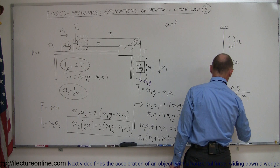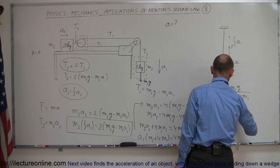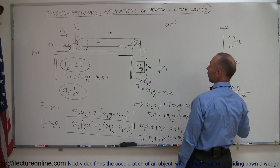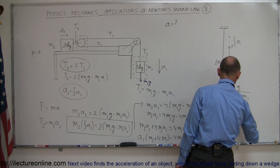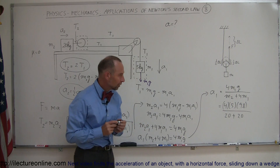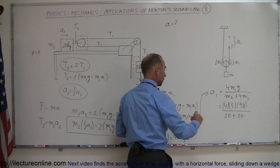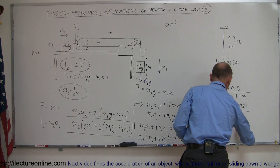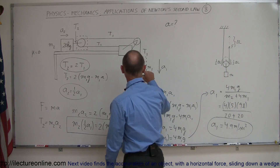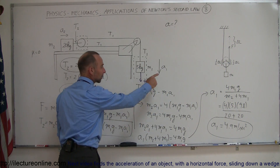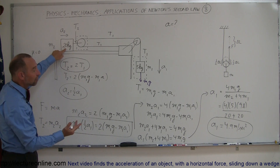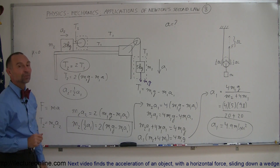Plugging in the numbers — M1 is 5 kilograms, M2 is 20 kilograms — we get A1 equals 4 times 5 times 9.8 divided by (20 plus 4 times 5), which is 20 divided by 40 times 9.8, giving 4.9 meters per second squared. So A1 is 4.9 m/s², and the acceleration of the 20 kilogram block is half that: 2.45 meters per second squared.